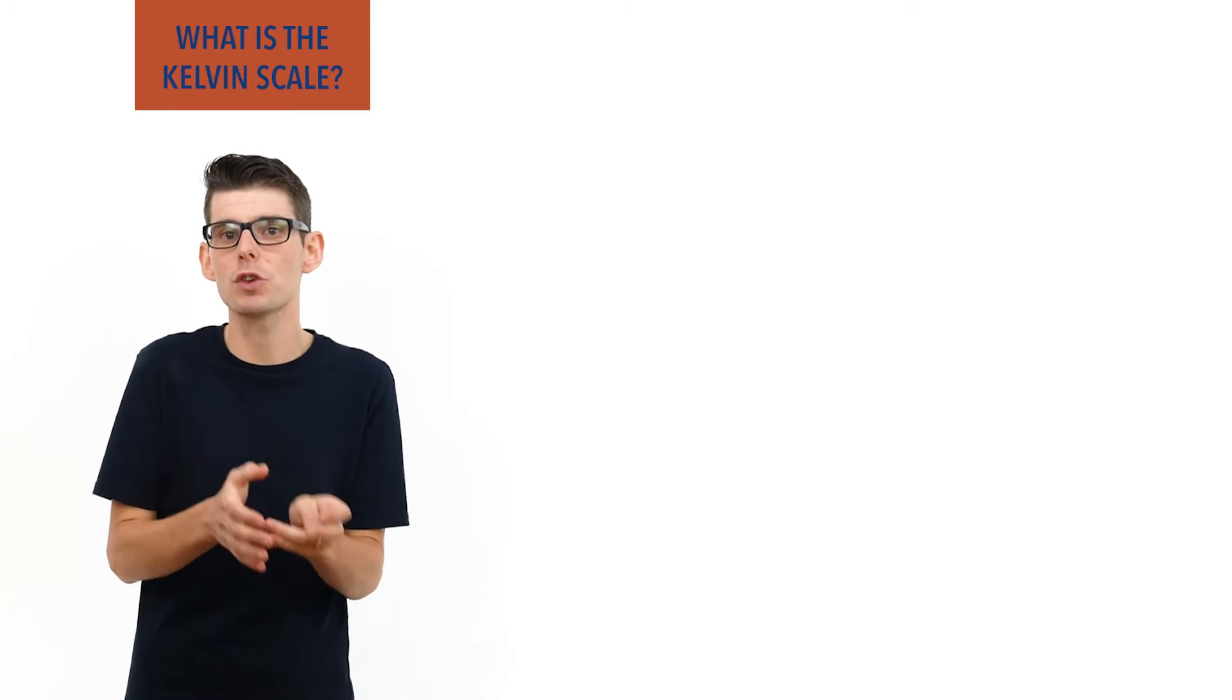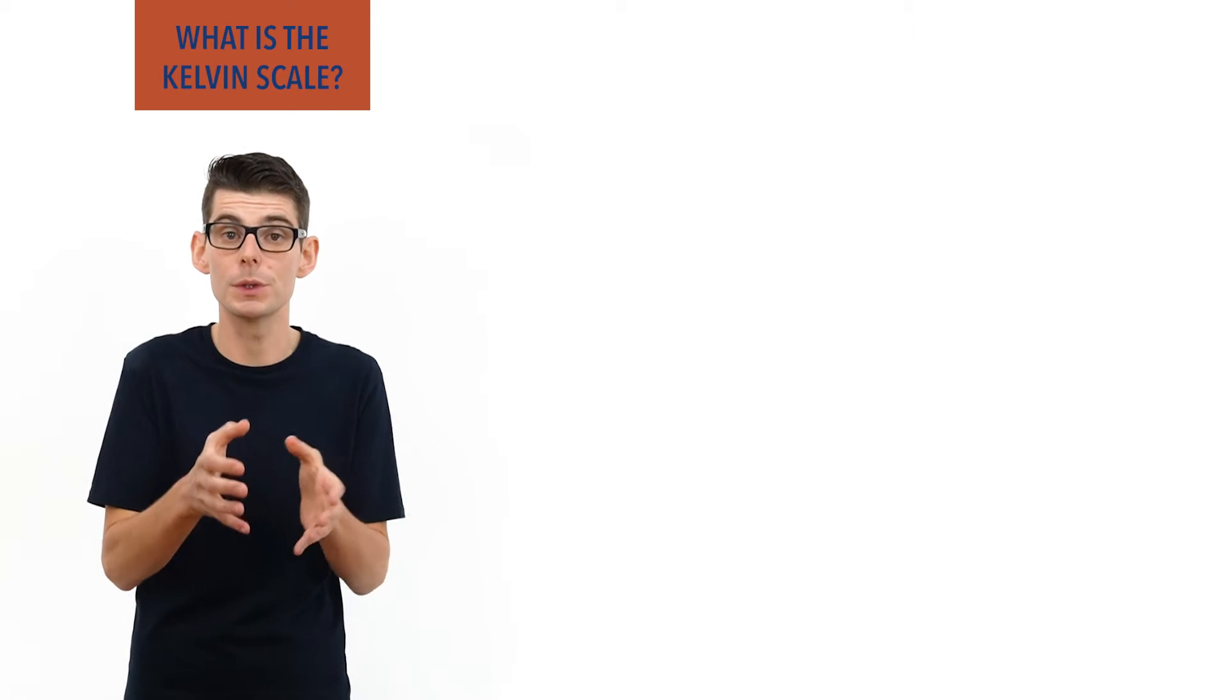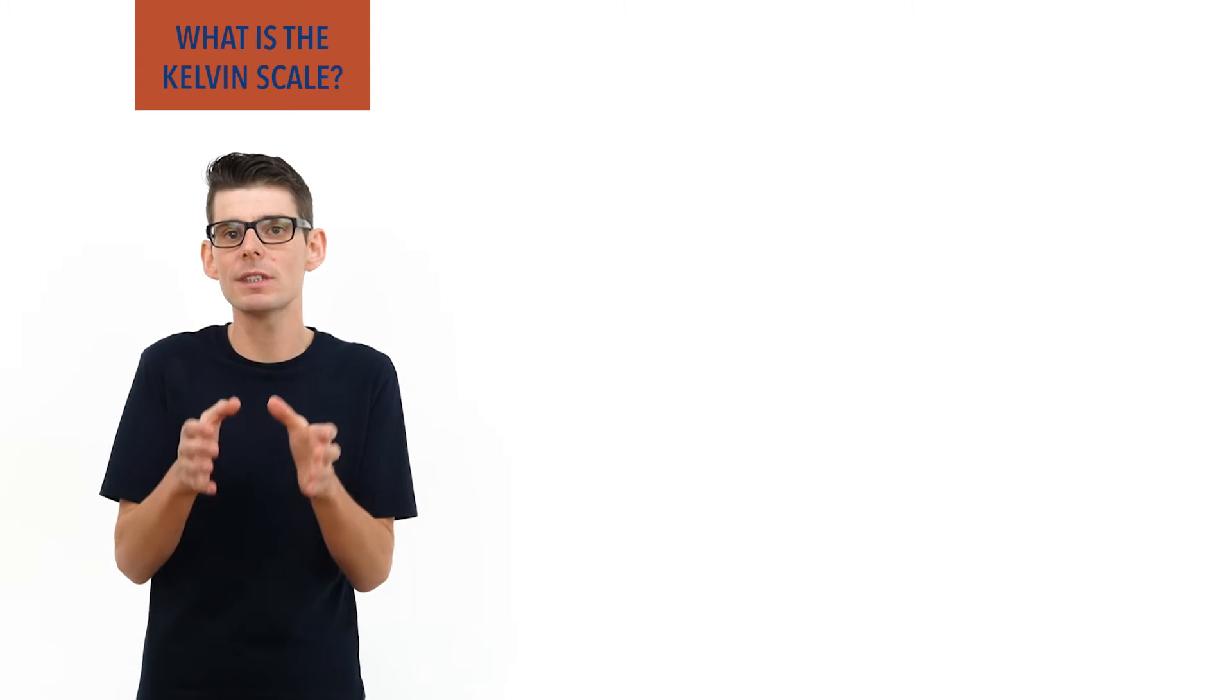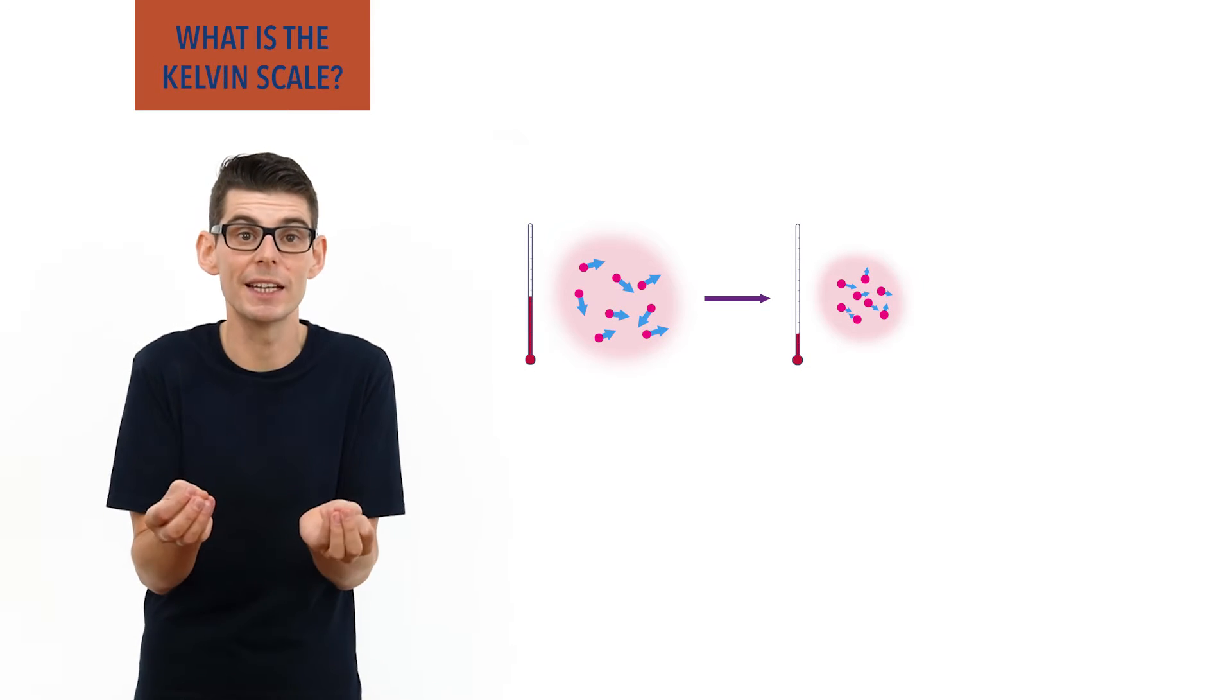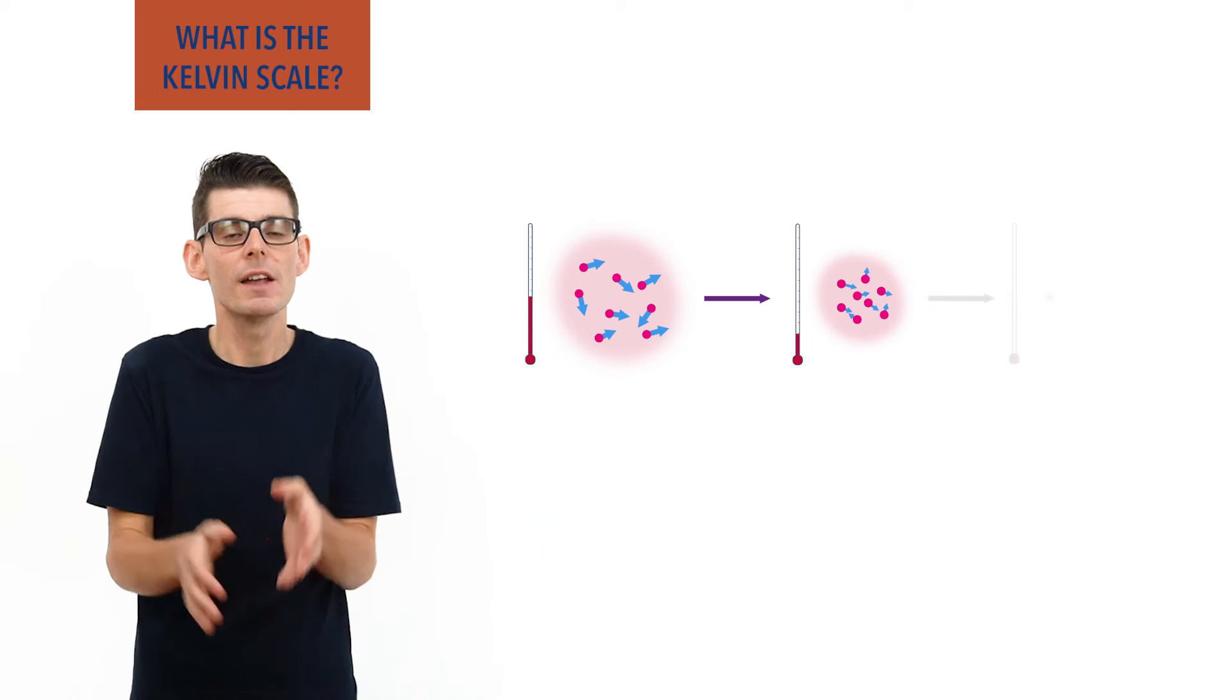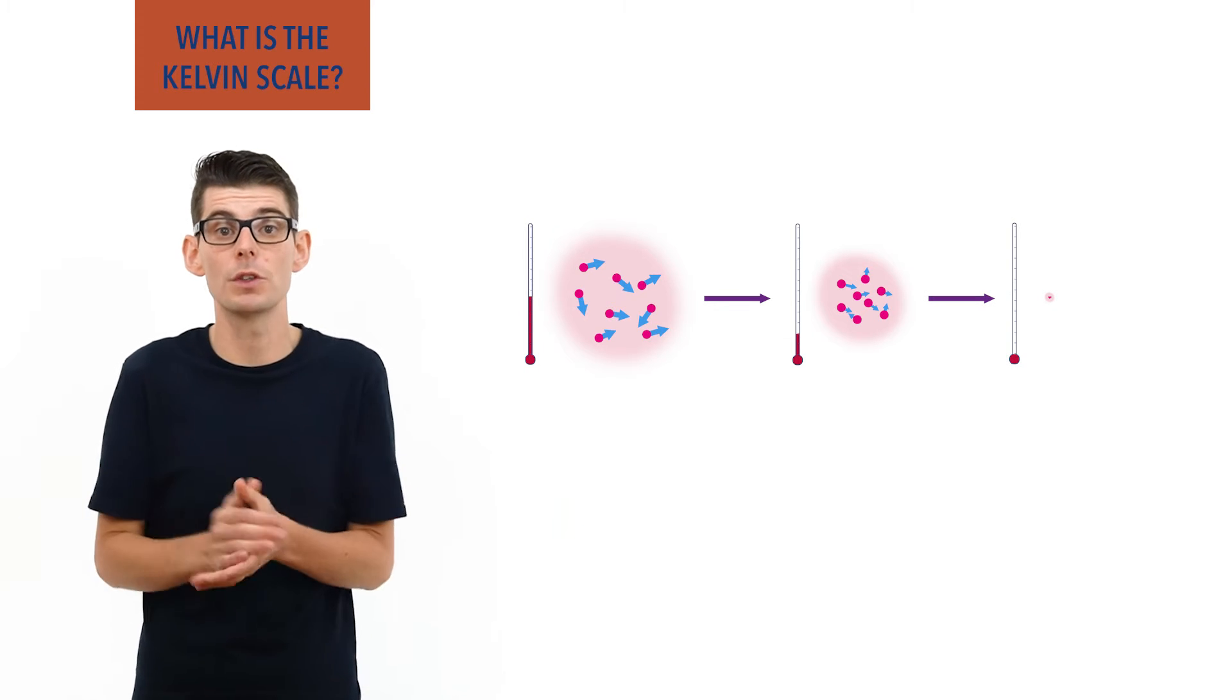The connection between temperature and how quickly molecules of gas move is really important, because if you keep decreasing the temperature of a gas to the point where the molecules have no heat energy and no kinetic energy, they can no longer move and won't occupy a measurable volume.